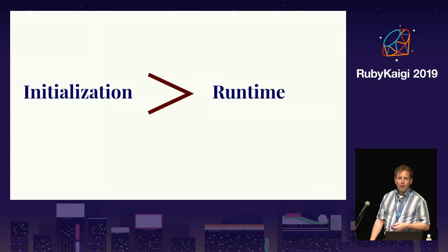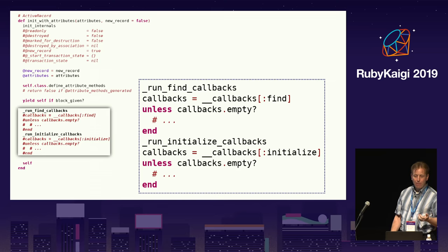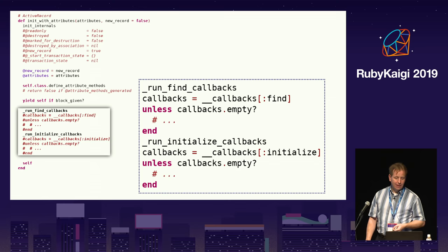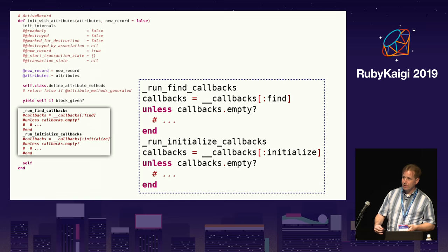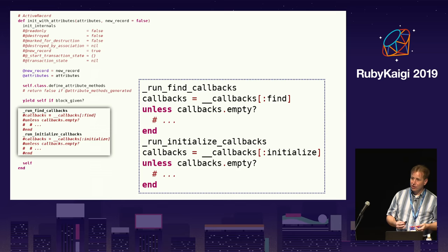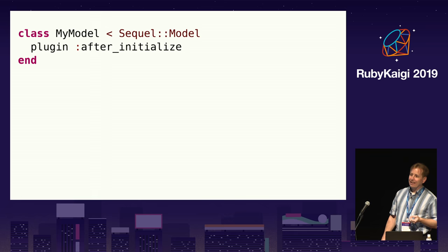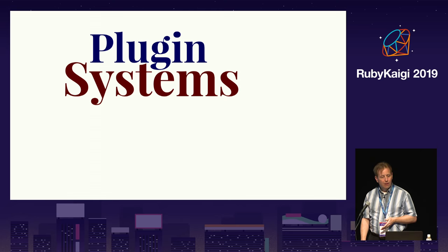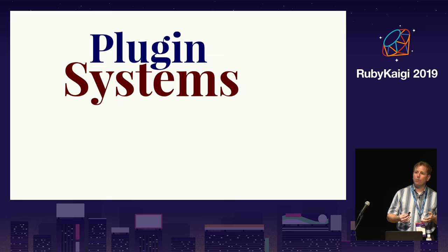The last thing ActiveRecord does during model instance creation is to run the find and initialize hooks for the model instance. However, if the model does not have any find or initialize hooks, this slows down model instance creation — it would be best to only run this code if the model actually had a need for them. Sequel avoids the need for models to check for initialize hooks by moving the initialize hook to a plugin. Sequel and Roda both share the idea of doing the minimum work possible by default, but they are still designed to solve the same problems that you can solve in other frameworks.